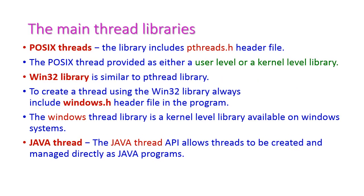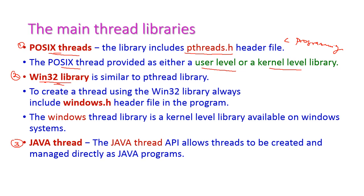The three important thread libraries are: POSIX thread (pthread), Win32 library, and Java thread. For POSIX thread, the header file is pthreads.h, used in C and C++ programming. POSIX thread provides either a user-level or kernel-level thread library. The Win32 library is similar to pthread, and creating threads with it requires including the header file windows.h in C. The Windows thread library is a kernel-level library available only on the Windows operating system.